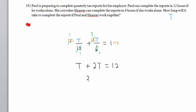On the left hand side we have 3T equals 12. Divided by 3 we get T equals 4 hours if Paul and Charisse work together to complete the job.